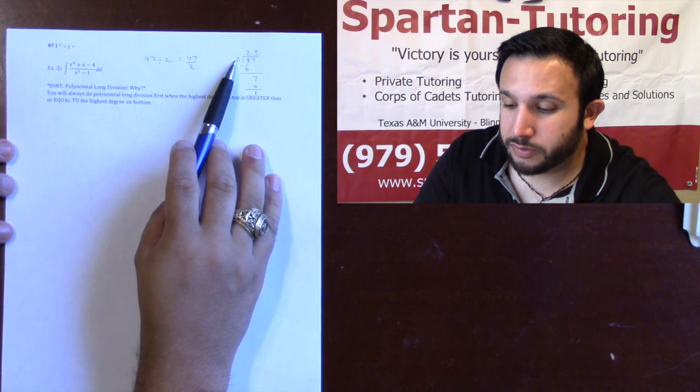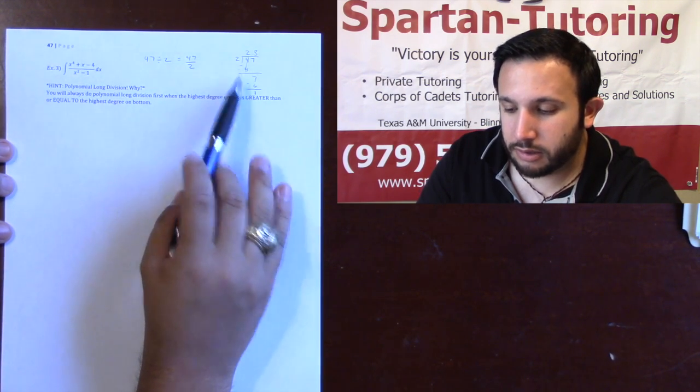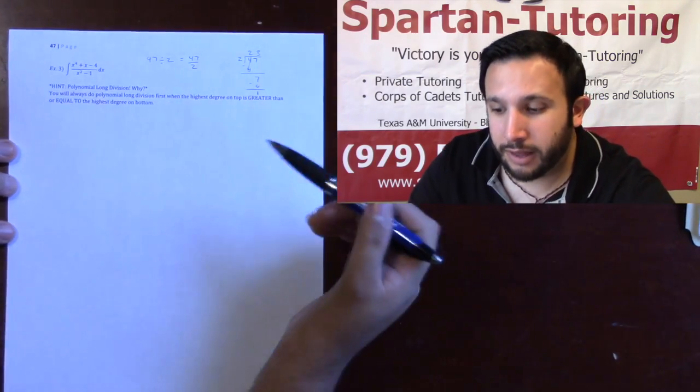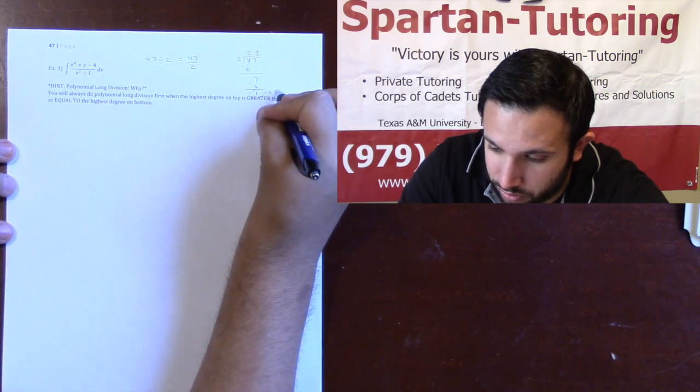Now, how many times, or what do I need to multiply 2 by to get a 1? You can't, right? There's nothing you can multiply 2 by to get a 1. You'd have to divide, right? And so, what this is, this is your remainder.